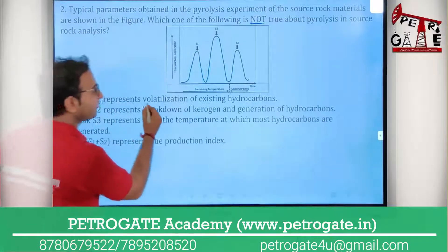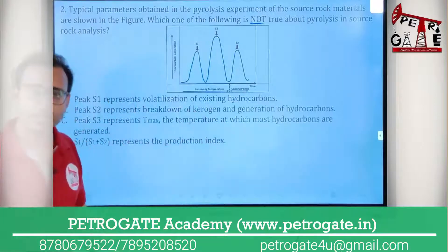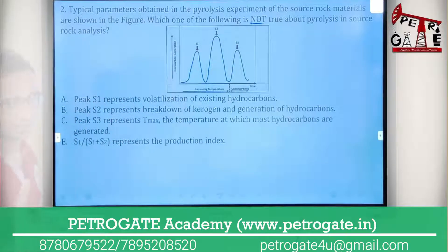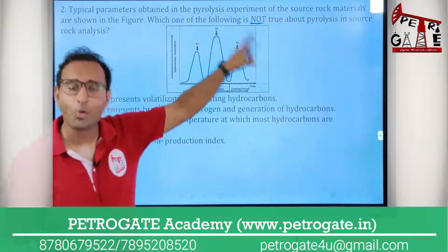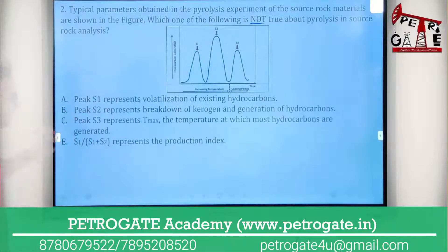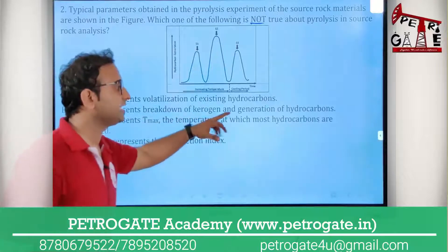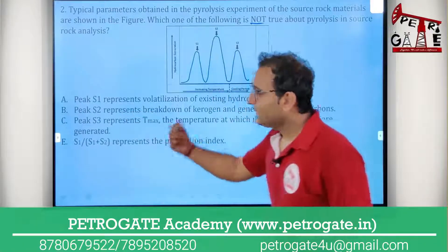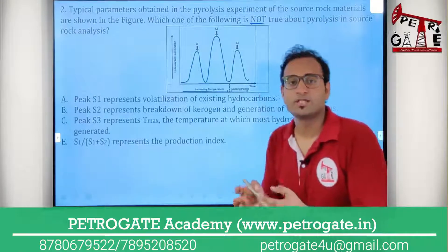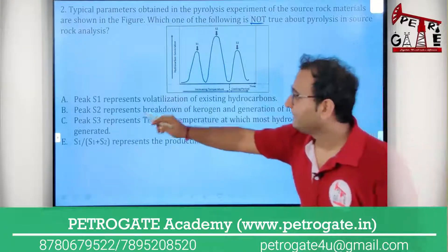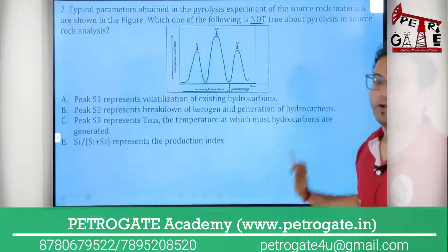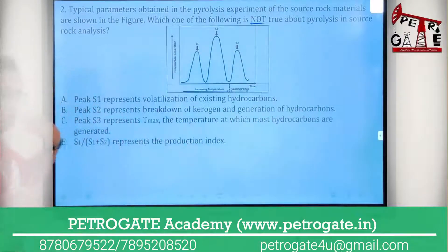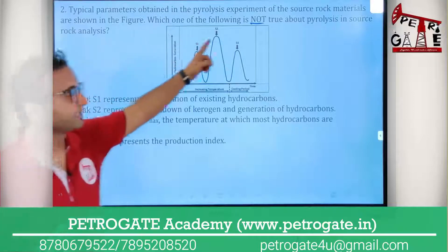Option A says: peak S1 represents volatilization of existing hydrocarbons. This is a correct statement, so it is not the answer. Option B says: peak S2 represents breakdown of kerogen and generation of hydrocarbon. This is also a correct statement, so it is also not the answer. We are looking for the NOT true option.